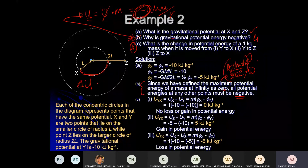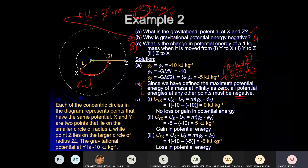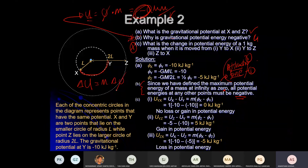Potential energy means U = –GMm/r; potential means φ = –GM/r. What is the change in potential energy between Y and X? ΔU = m × Δφ. The change in φ from Y to X is zero — so no potential energy gain or loss.